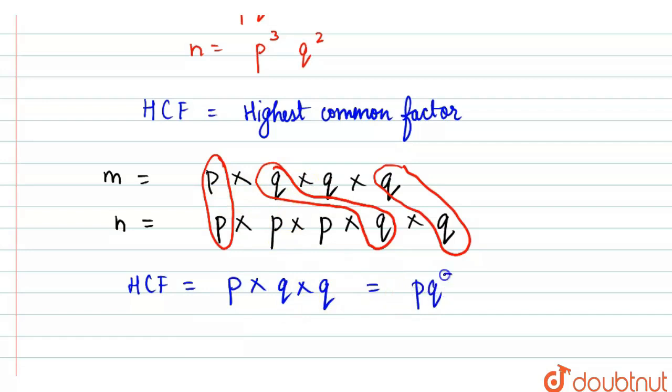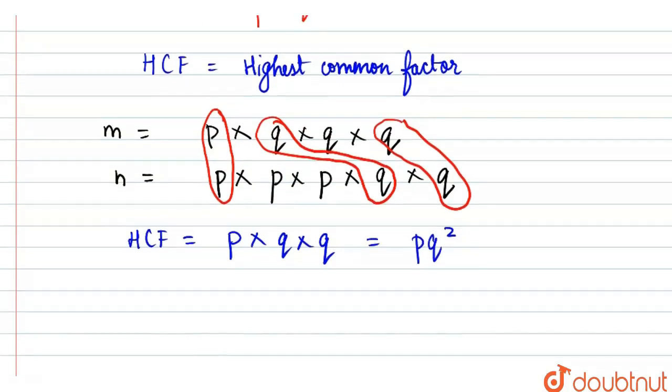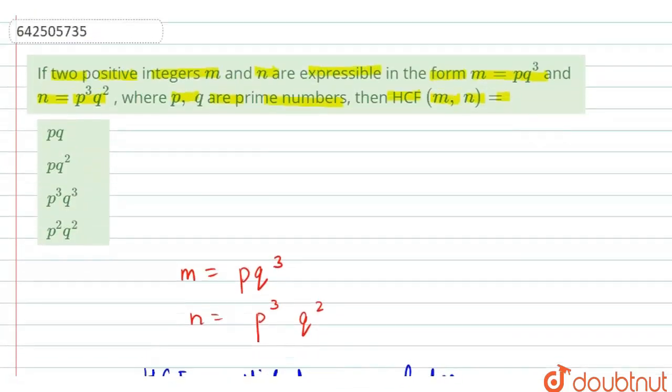Because that is common between both of them, we can write PQ square. So it is PQ square, we got our answer. PQ square, option B is our answer. PQ square is the correct answer.